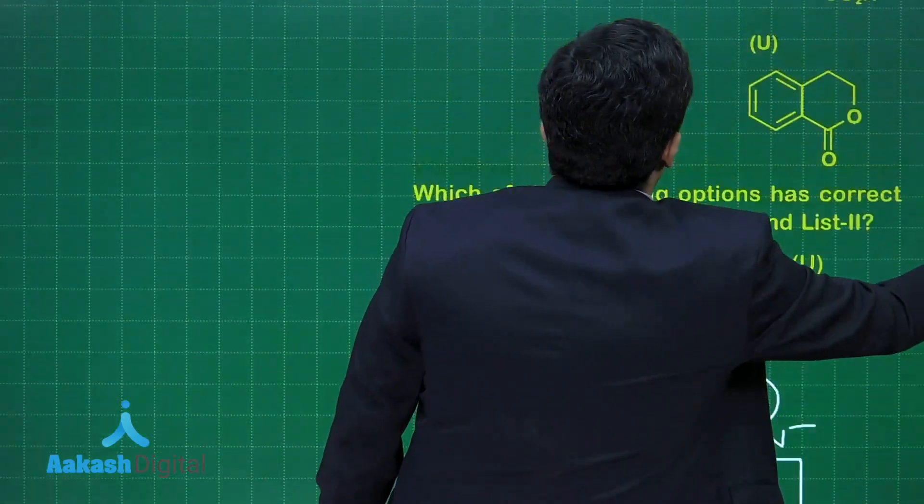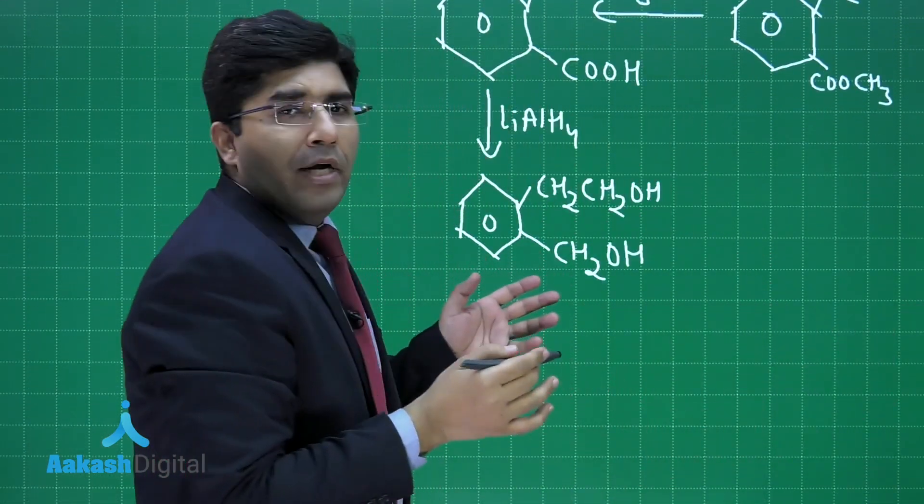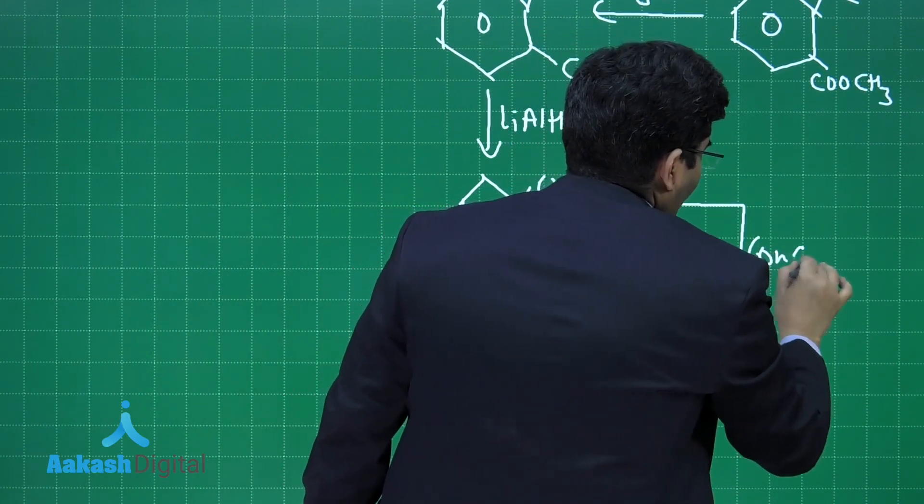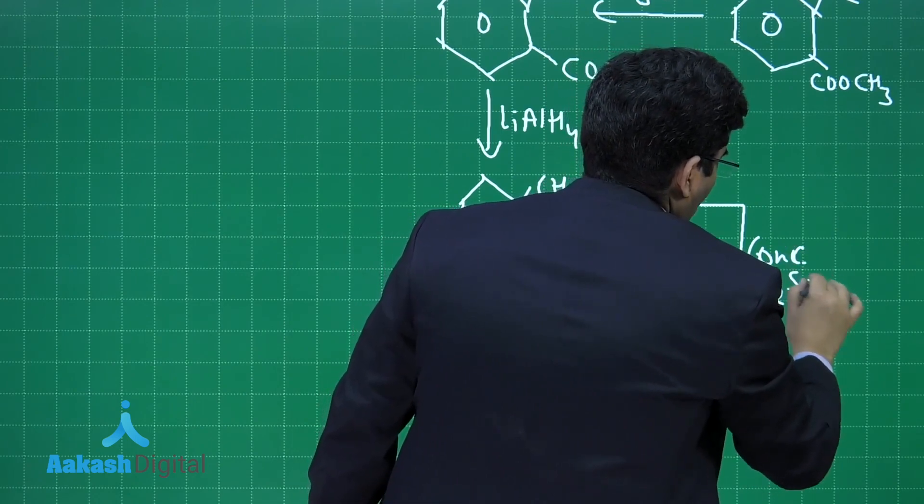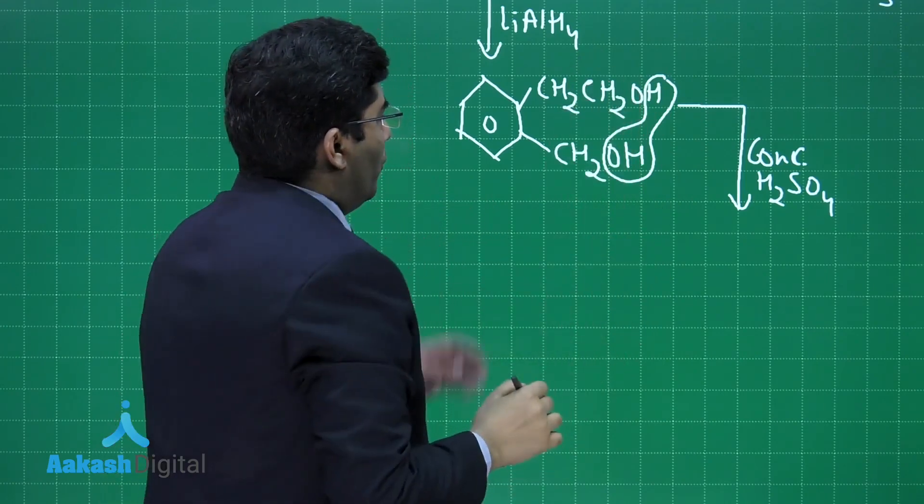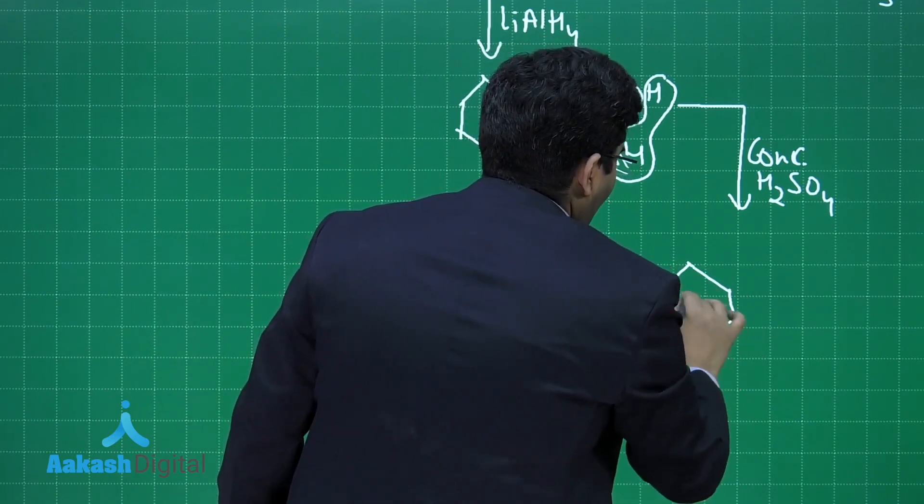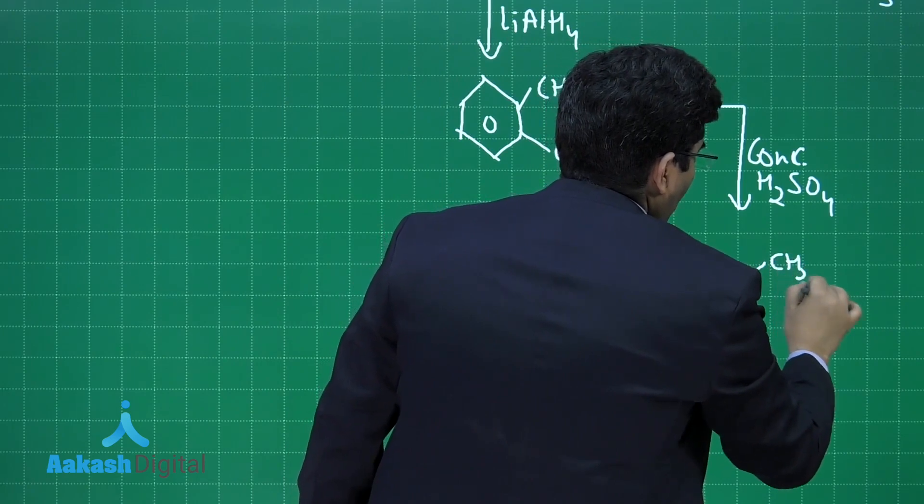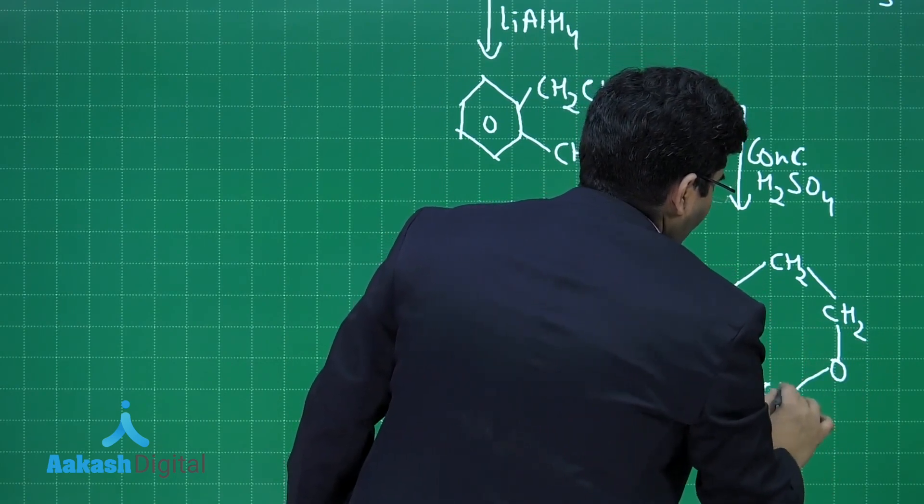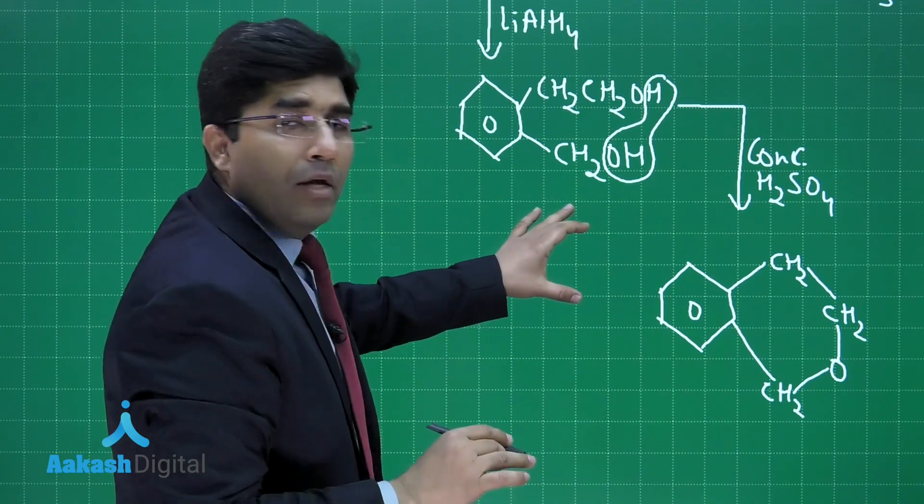After this, he is adding concentrated H2SO4 and we all know that concentrated H2SO4 causes dehydration. Dehydration of this particular compound will take place and one hydrogen and OH will be removed from here. The product will have a benzene ring, then CH2, then CH2, then oxygen, then CH2.